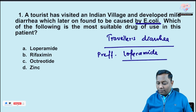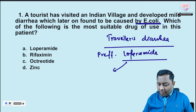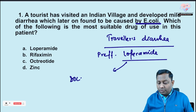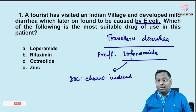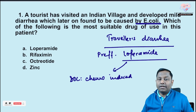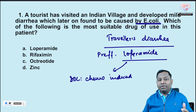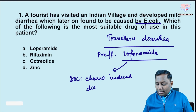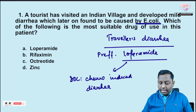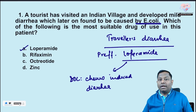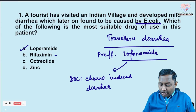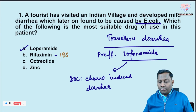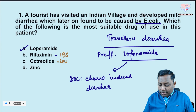Loperamide decreases secretion and decreases motility — decreasing motility is its most important function. Loperamide is also the preferred agent in chemo-induced diarrhea. For chemo-induced nausea and vomiting, we use 5HT3 antagonists, but for chemo-induced diarrhea, the correct answer is loperamide. Rifaximin, a rifamycin derivative, is mainly used for irritable bowel syndrome.